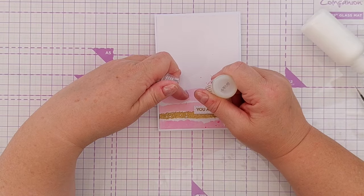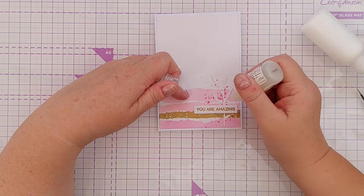And as a finishing touch, I decided to dot on a few little glossy accents, a bit like Nuvo drops or enamel dots. And that's this card finished. I do hope you've enjoyed it and it's given you some ideas of things you can do with the supplies that you have in your stash.